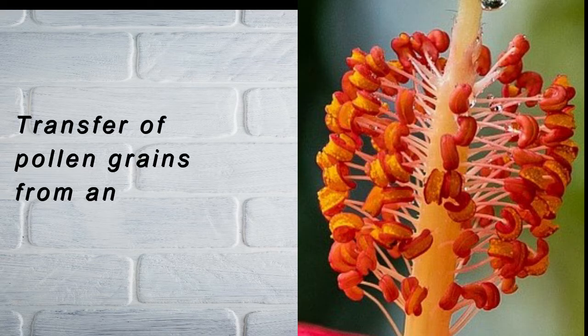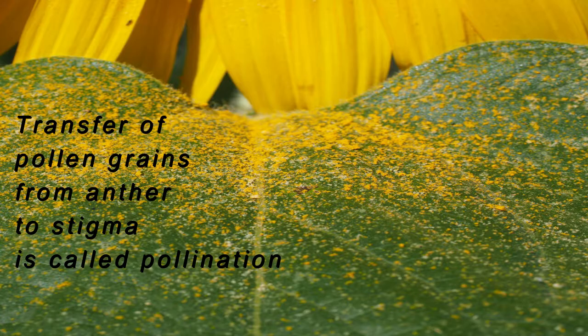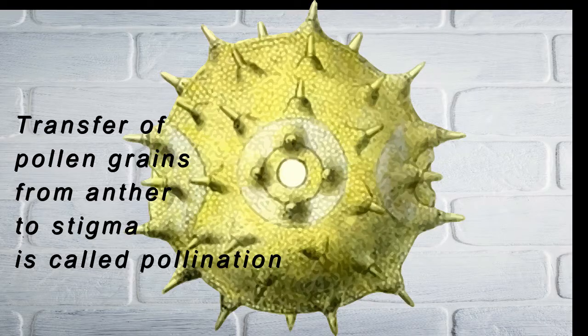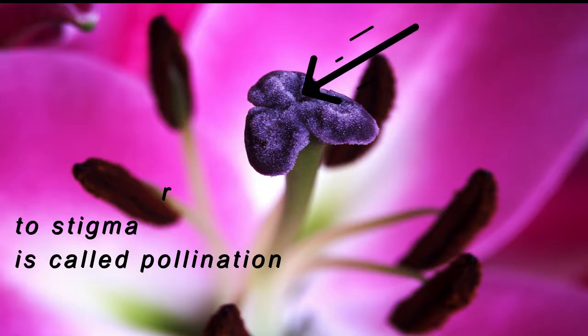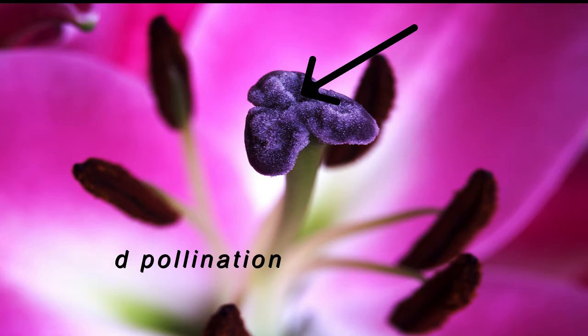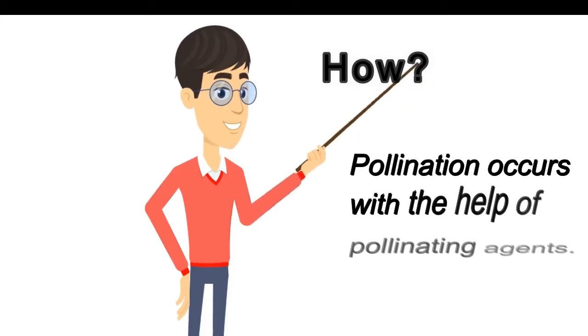The transfer of pollen grains from anther to stigma is called pollination. This is an example of a single pollen grain which reaches the stigma where the arrow points, and the above process occurs.